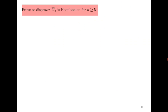Let us consider one more very interesting question: prove or disprove that Cₙ bar is Hamiltonian, where Cₙ is the cycle of length n and Cₙ bar means its complement. We know that C₅ is isomorphic to its own complement and C₅ is Hamiltonian, therefore C₅ bar is Hamiltonian. So the result needs to be proved or disproved for n ≥ 6.